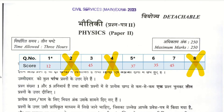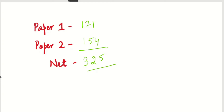Skipping Question 8. Total for Paper 2: 174. After a gross cut of 20 marks, we get 154 from Paper 2. Net total: Paper 1 gives 171, Paper 2 gives 154, so the net total is 325. We are getting 300 plus score. You can apply this to previous years' papers as well and get similar results if you follow this strategy correctly.